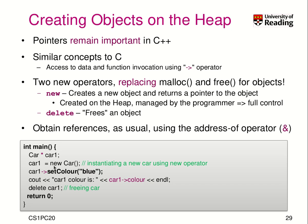We assign it to car1 — this is similar to using malloc but does a bit more, as we will learn in the future, to ensure the object is correctly constructed. We can then call car1->setColor("blue") to set the color of whatever car1 points to. We can print the color as before, and then instead of calling free, we use delete car1. Delete removes whatever car1 pointed to, analogous to new.